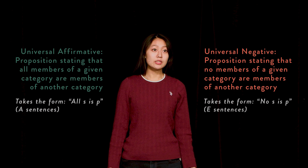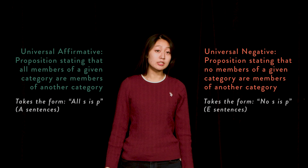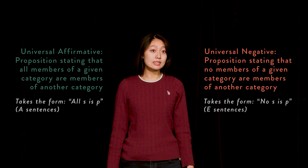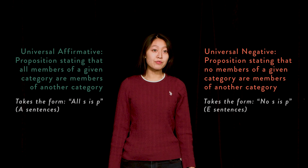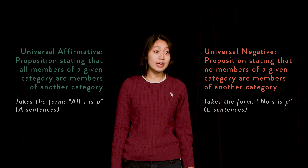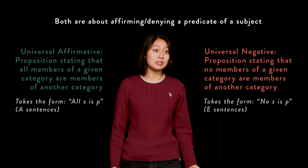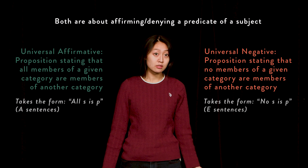Generally, to affirm is to say yes to something or to take it as true. To negate is to say no or to take it as false. Universal Affirmative and Negative propositions get their names by affirming or denying that some predicate is true of a subject.